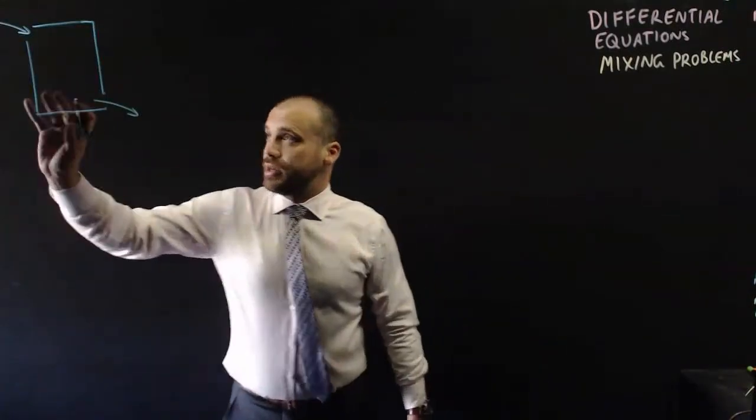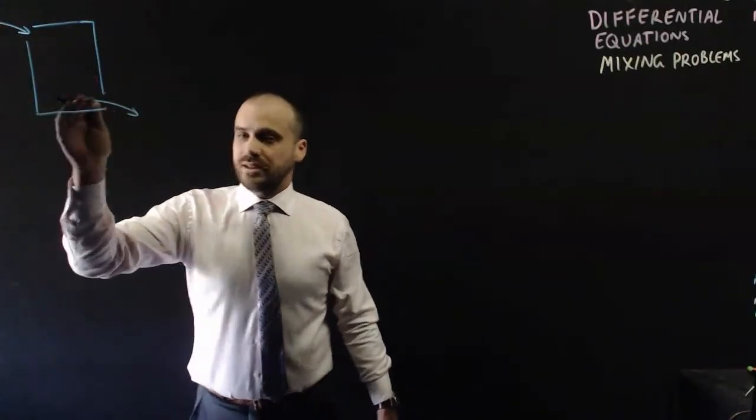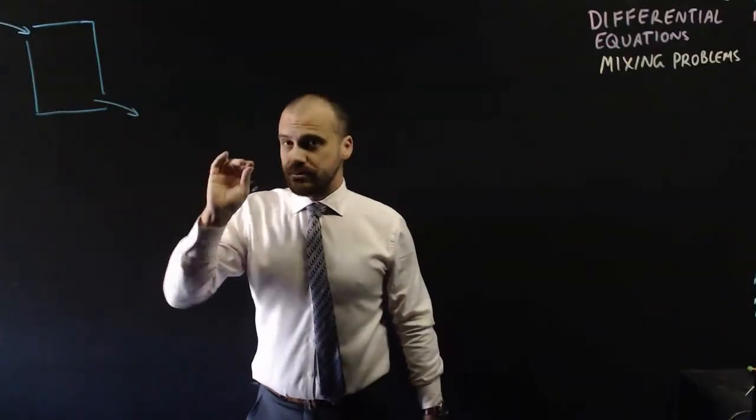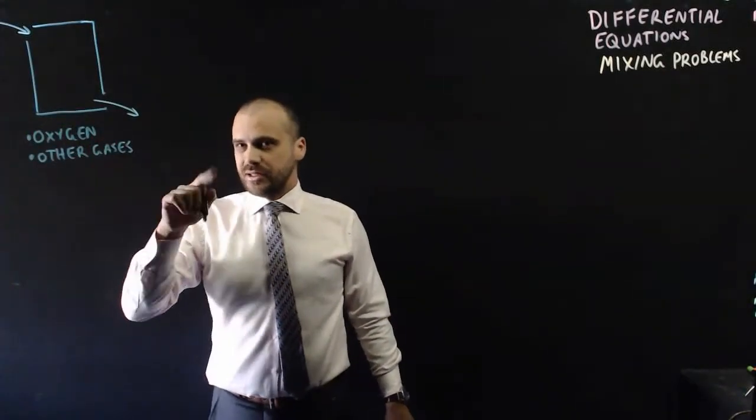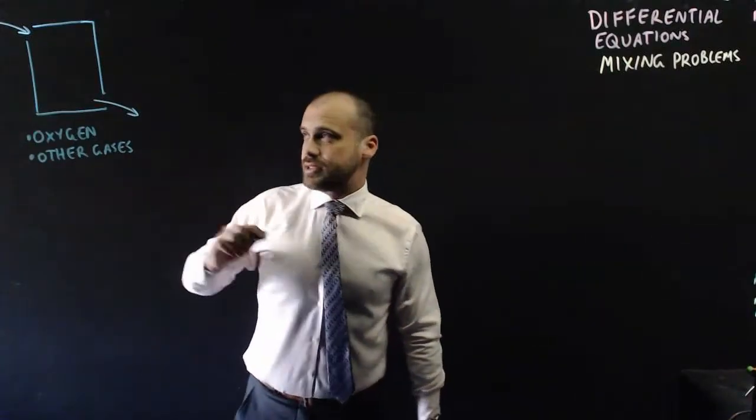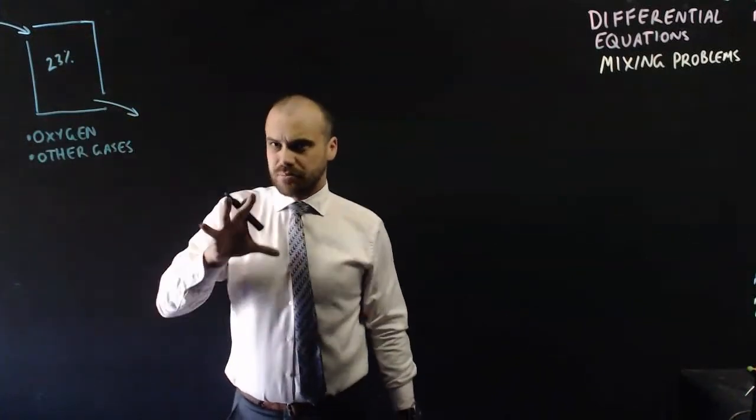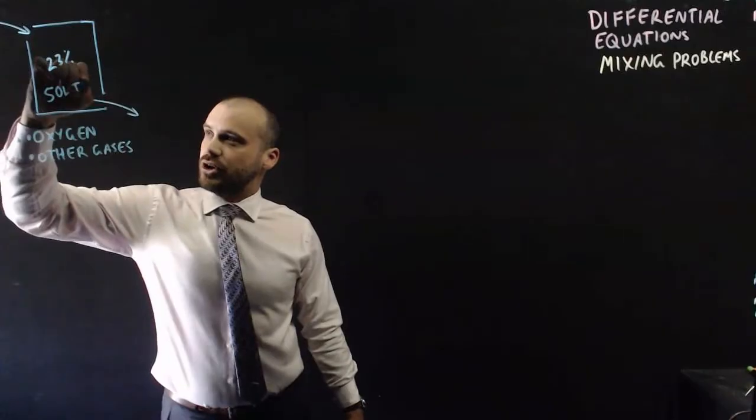So mixing problems are always set up the same way. There's some box, some container, there's stuff flowing into it, and there's stuff flowing out of it as well. And it's always a mixture of things. I'm going to say oxygen and other gases. Now let's do it the same as the atmosphere. Let's say that there's 23% oxygen in this box. And we'll also say that the box holds 50 litres total.